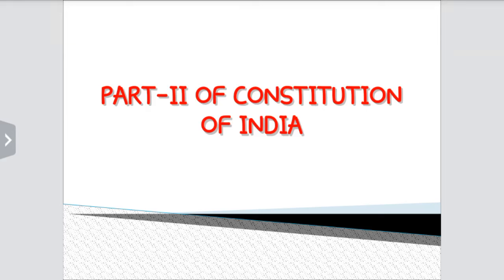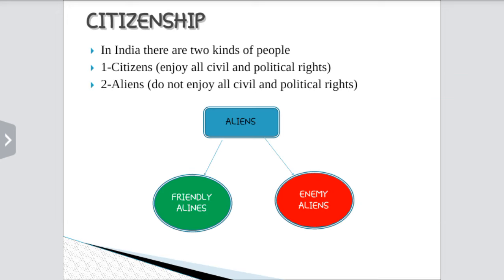Hi everyone, this is Sainad. Today let us start another class in Polity Series, that is Part 2 of the Constitution of India — Citizenship in India. There are two kinds of people: citizens of India and aliens. Citizens are those people who enjoy all the civil and political rights. Aliens do not enjoy all civil and political rights.